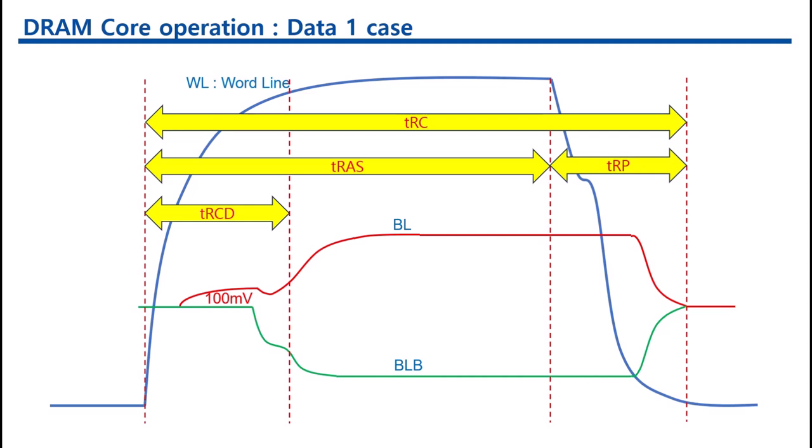The word line disable command is called pre-charge, and the timing from pre-charge to bit line equalization is called TRP.